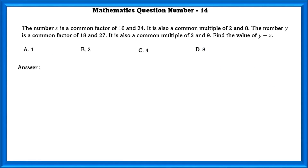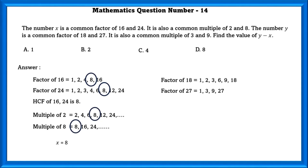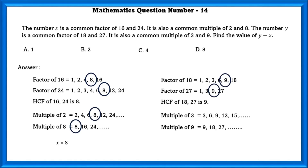Mathematics question number 14. The number x is a common factor of 16 and 24, and also a common multiple of 2 and 8. The number y is a common factor of 18 and 27, and also a common multiple of 3 and 9. Find y minus x. The HCF of 16 and 24 is 8, so x equals 8. The HCF of 18 and 27 is 9, so y equals 9. Therefore, y minus x equals 1.